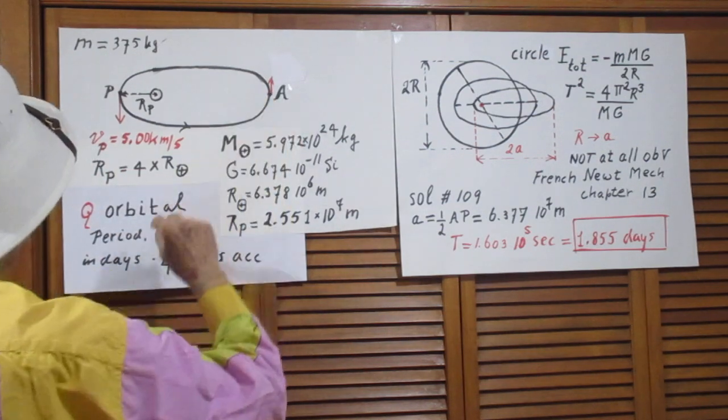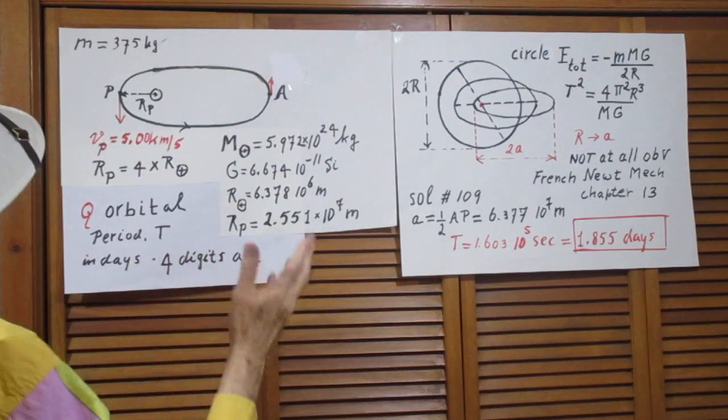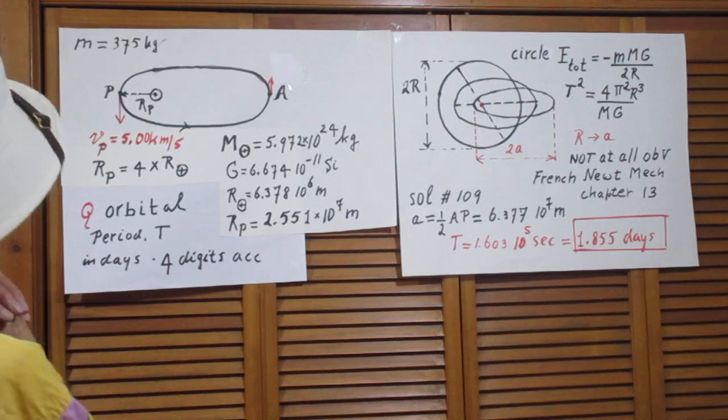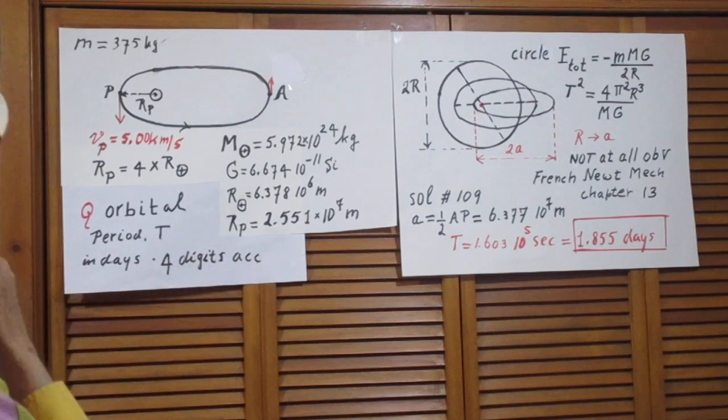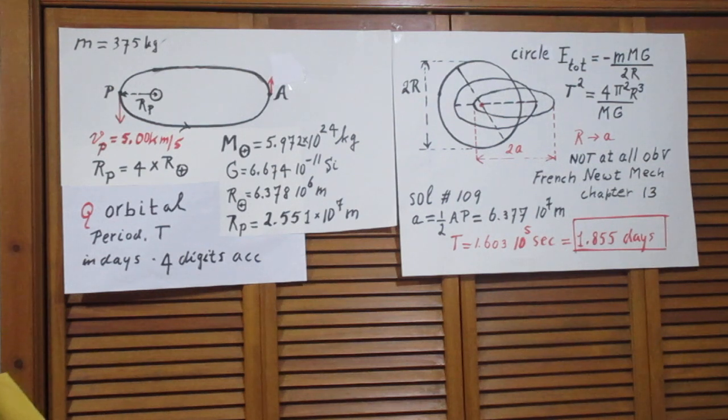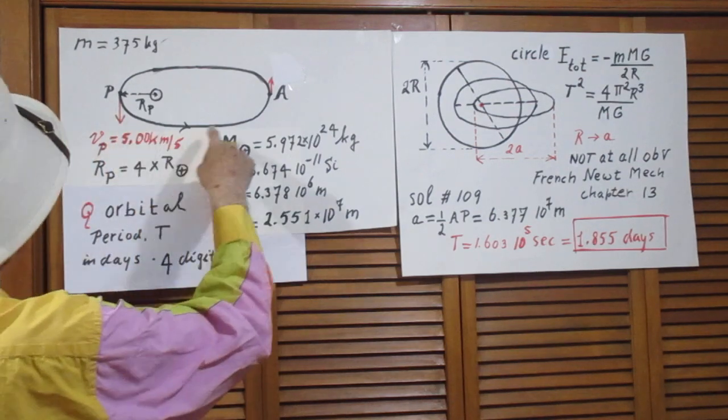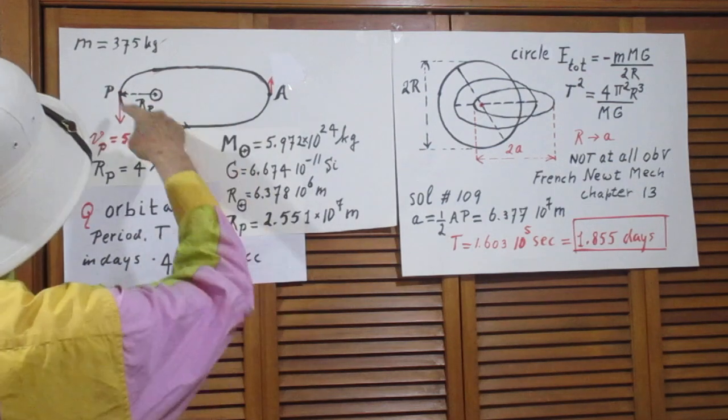Here is apogee and in apogee it has a velocity V apogee which is less than this one. That was all part of problem 109. Now the question is what is the orbital period of this satellite?